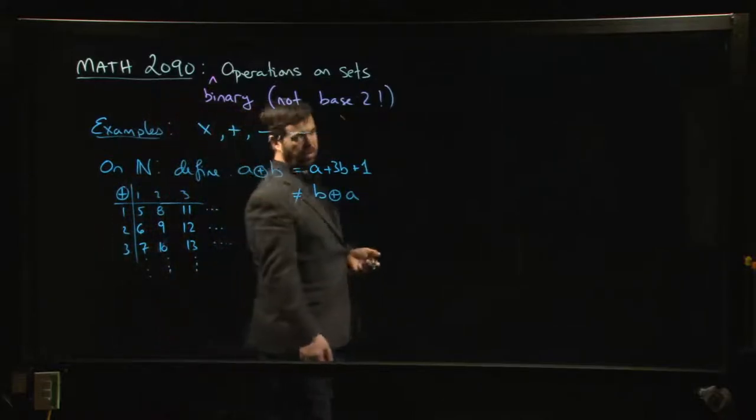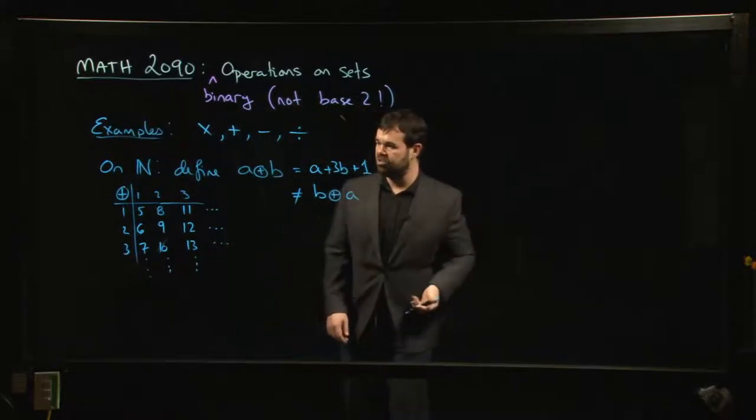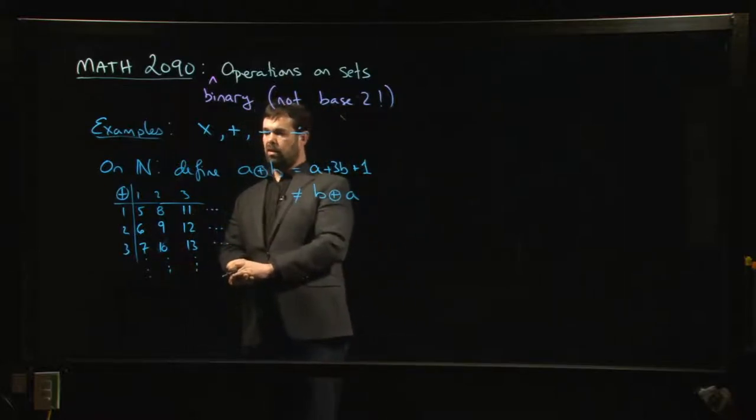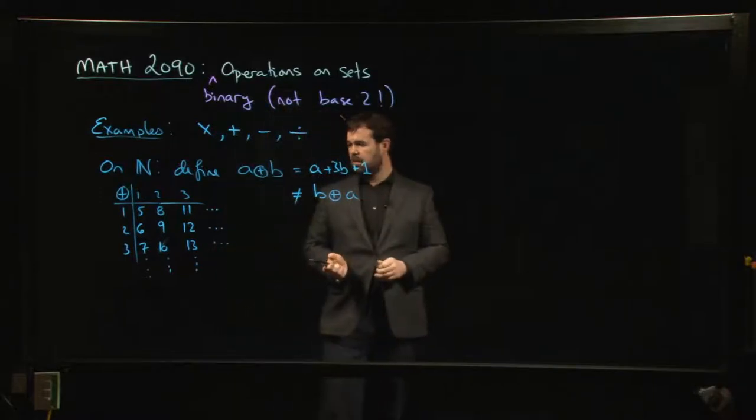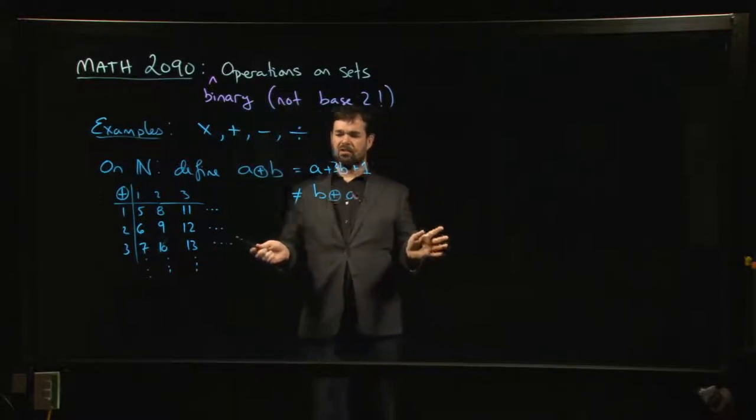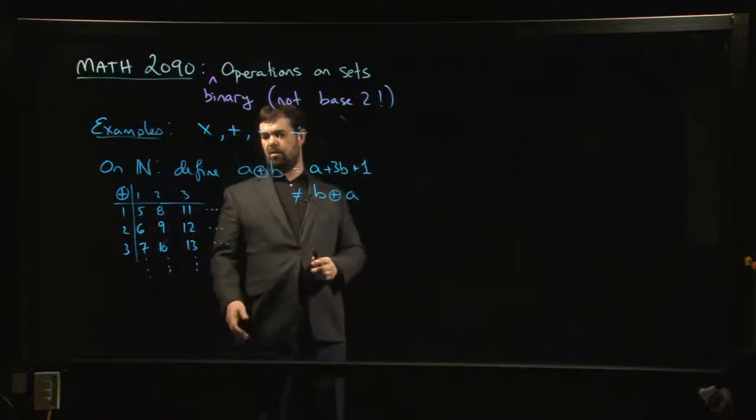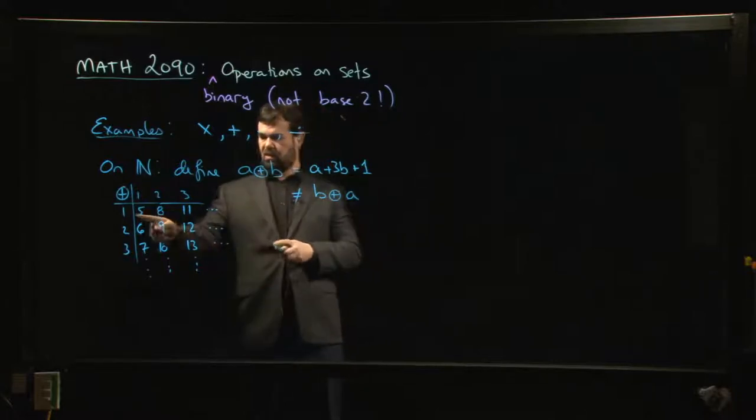Right, and so you can play around with examples like this. You can define sort of silly additions, silly multiplications. You can create the table for that operation, see what you get. And actually, sometimes these are good exercises just to play around and start filling out the tables and see what sort of patterns you get, right? What other sort of patterns can you identify?